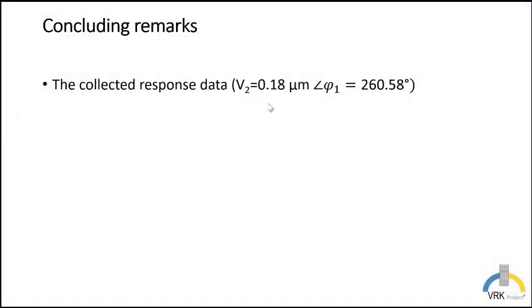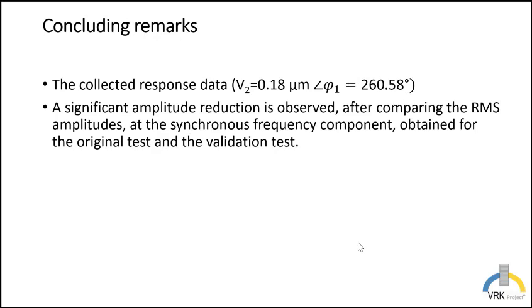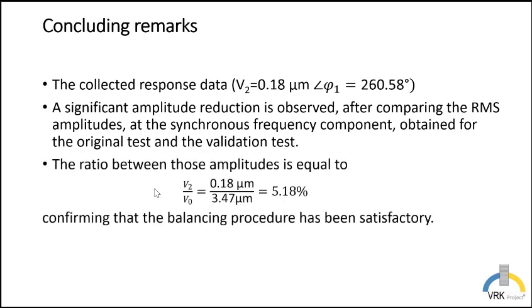The collected data is for the amplitude 0.18 microns at 260.58 degrees. When we compare the initial amplitude with this amplitude, we can say that there is a significant amplitude reduction. When we do the ratio between the last amplitude recorded and the initial amplitude we see that the last amplitude is 5% of the initial, so we have almost 95% reduction of our amplitude. Therefore, we can confirm that the balancing process was satisfactory.